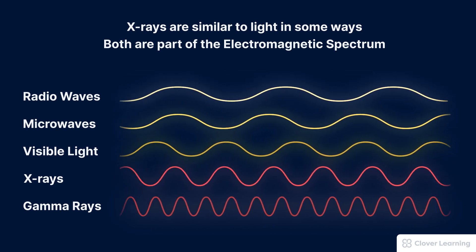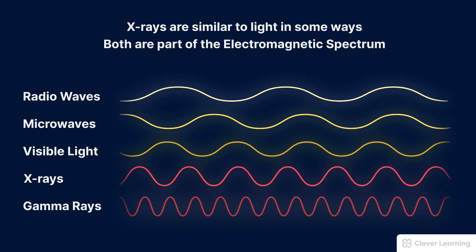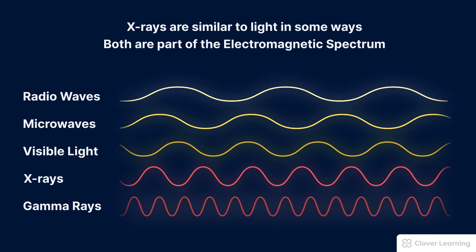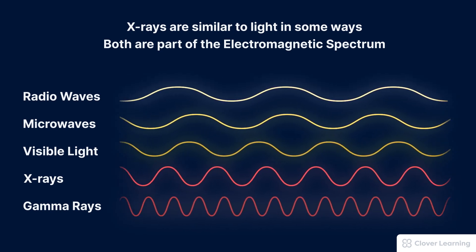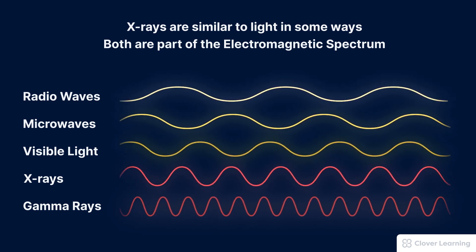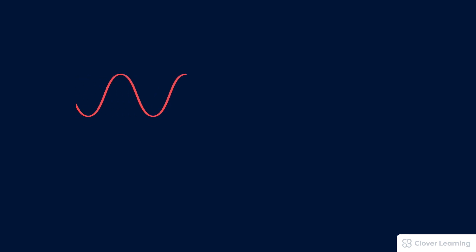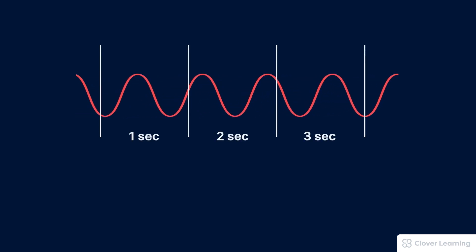So these terms are all referring to photons. The only difference is the energy of these photons, which is controlled by the wavelength and the frequency. Wavelength and frequency are not complicated ideas. The wavelength is simply the measurement from one peak to the next peak. When we're talking about x-ray photons, the wavelength is commonly measured in nanometers.